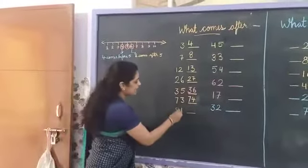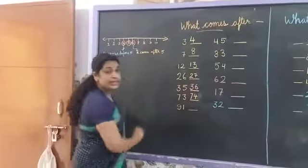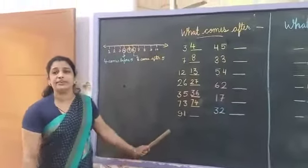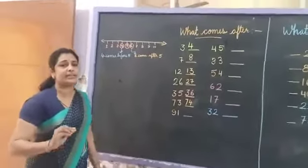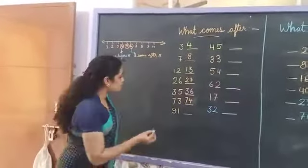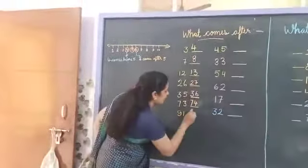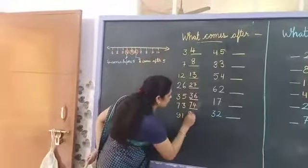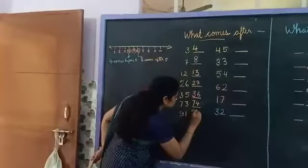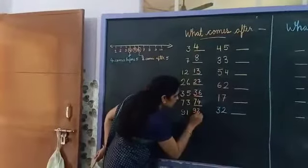Next number is 91. What comes after 91? 9, 2 — that is 92. You have to write 9, 2 — 92.